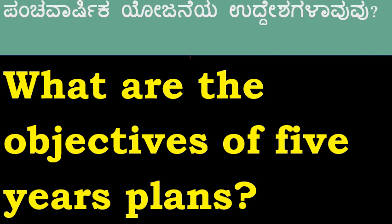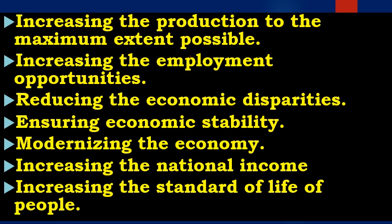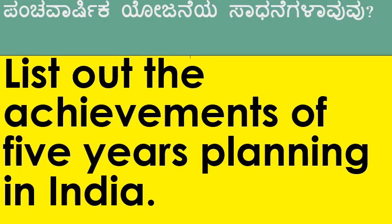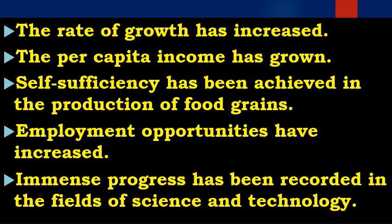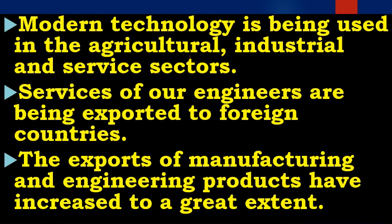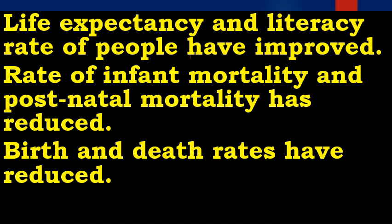What are the objectives of the 5 Year Plan? — a very important one. Increasing production to maximum, increasing employment opportunity and national income, and improving the standard of life of people are the objectives. Achievements of 5 Year Planning in India: the growth rate has increased, per capita income has grown, self-sufficiency has been achieved in food grain production, life expectancy and literacy rate have improved, and birth and death rates have reduced.